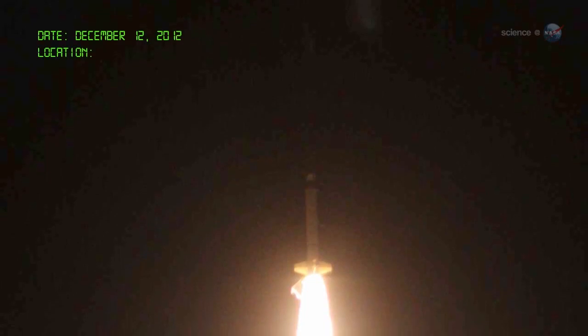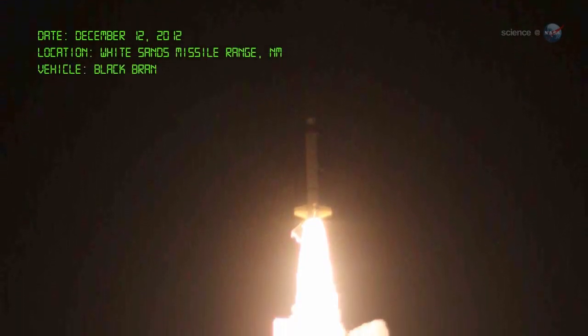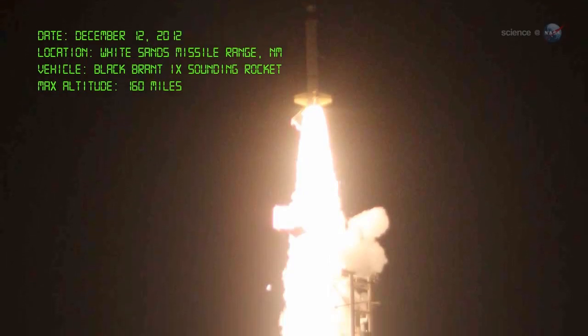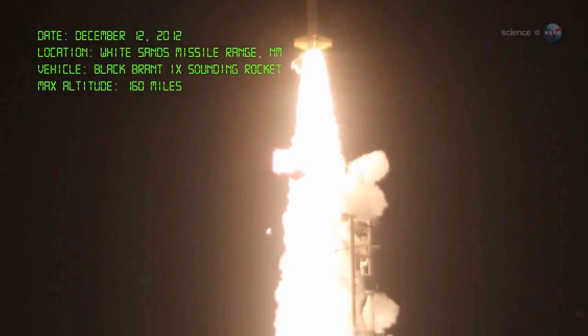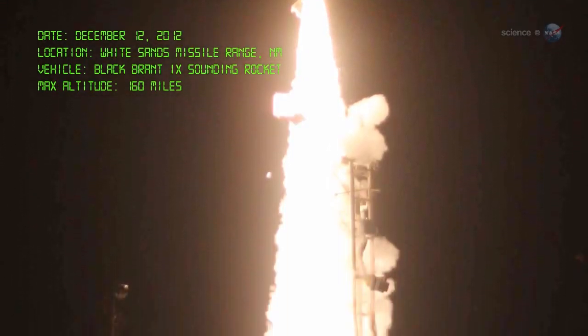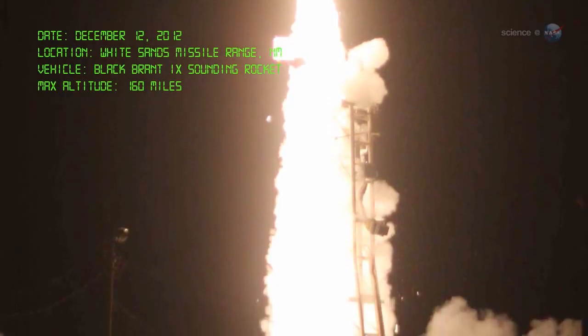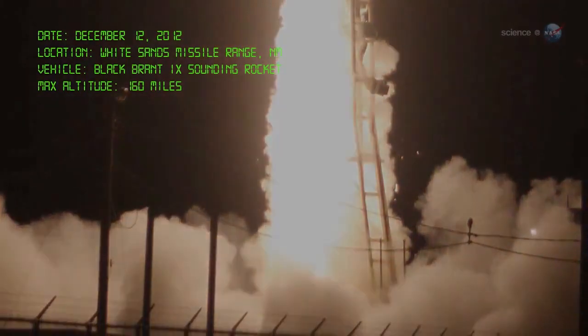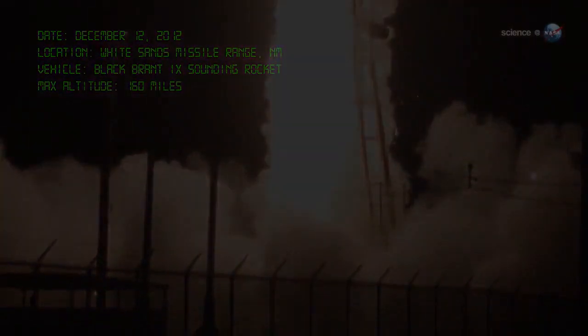On December 12, 2012, DXL launched from White Sands Missile Range in New Mexico atop a NASA Black Brant 9 sounding rocket, reaching a peak altitude of 160 miles and spending five minutes above the Earth's atmosphere. That was all the time they needed to measure the amount of charge exchange X-rays inside the solar system.